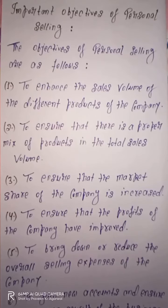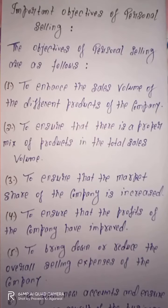Second objective is to ensure that there is a proper mix of products in the total sales volume. Sabse khaas baat hai ki, personal selling hai, jab organization is ko follow karta hai, toh ye koshish karta hai ki jo total sales volume me product ka ek proper mix forward kiya ja sake. Jisse ki consumers ke liye variety of products salesman ke dwara offer kiya ja sake.